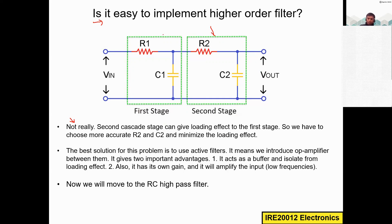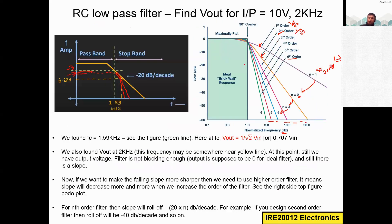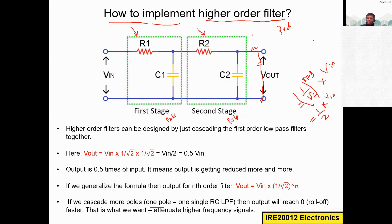The second cascade stage can give a loading effect to the first stage, and each additional stage loads the previous one. You have to choose very accurate R2 and C2 values and do many iterations and simulations. To achieve a sharper roll-off, for example with a sixth order filter, you connect six poles and six stages, which increases the number of components and cost.